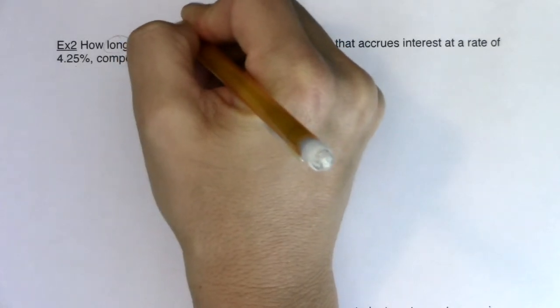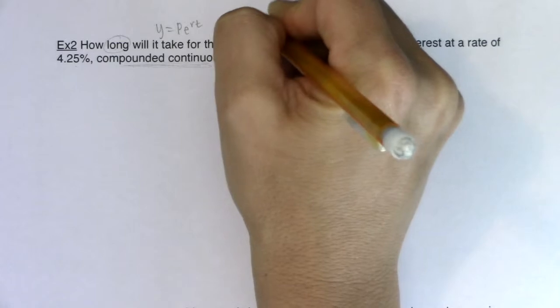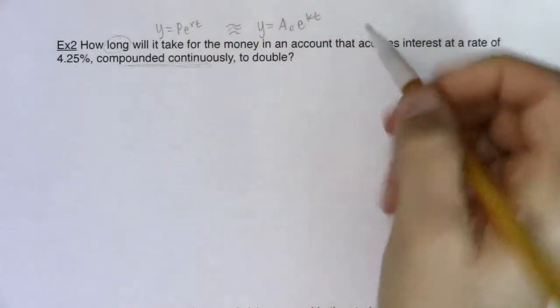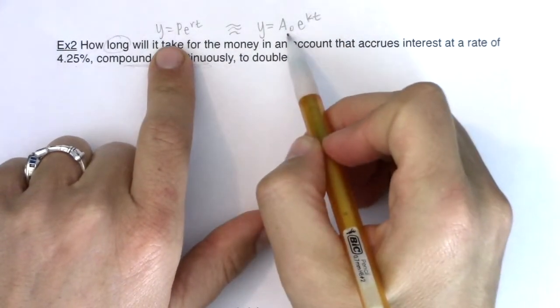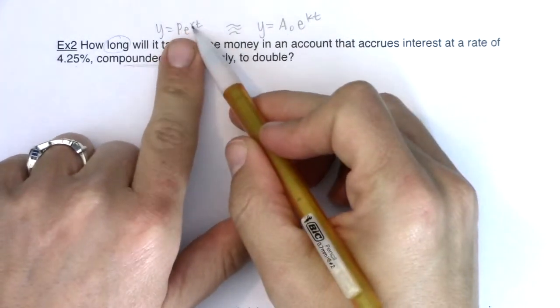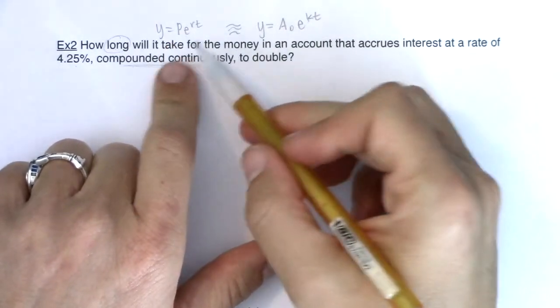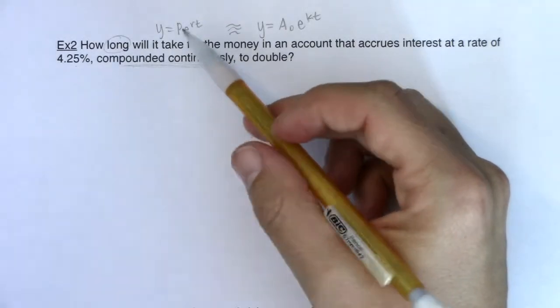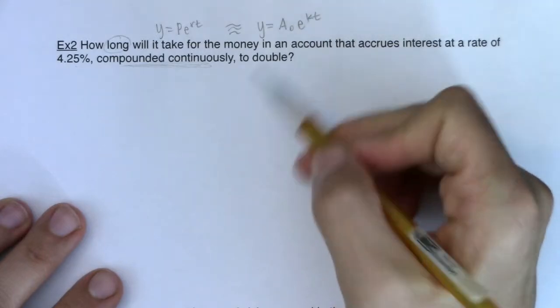So if we take a look at the PERT formula, it's exactly equivalent to the A sub zero E to the kt formula. All right, where P was our initial amount, A sub zero is our initial amount, r is our interest rate, now k is our interest rate. So it doesn't really matter what labels I give them. And we've been trying to, or I've been trying to focus on this all semester, we have to divorce ourselves from certain letters and just remember what these letters represent.